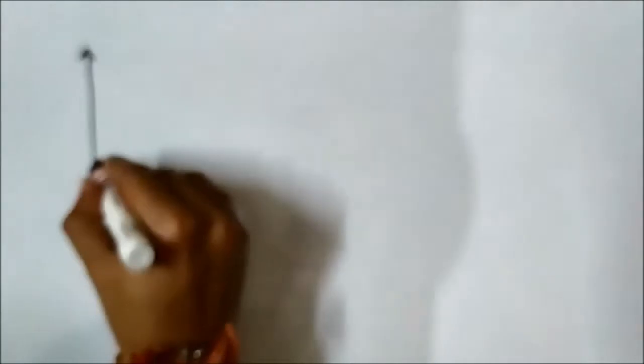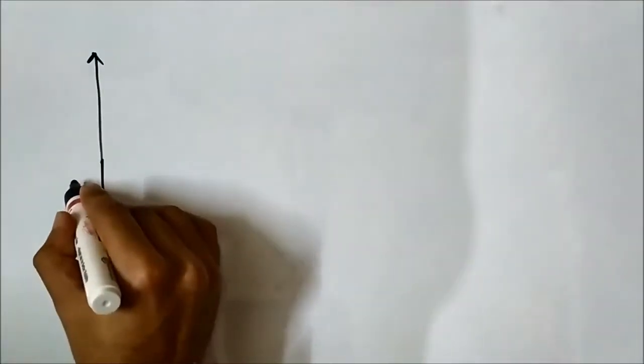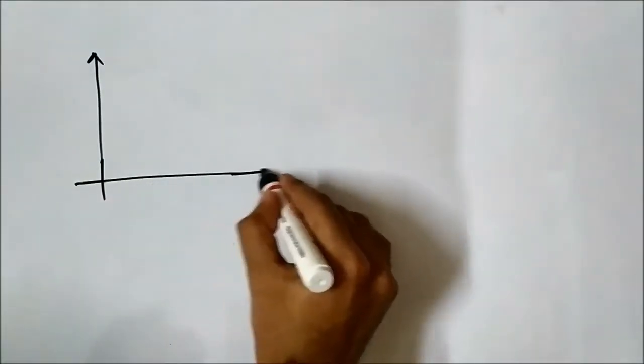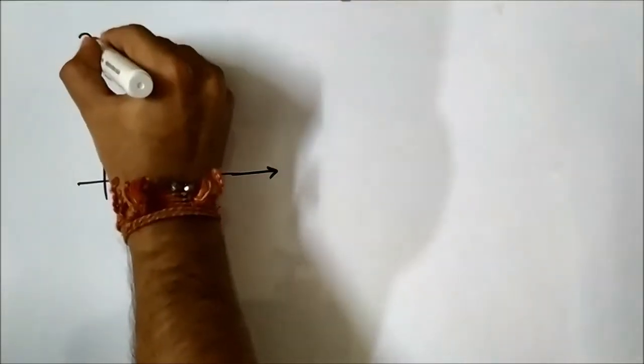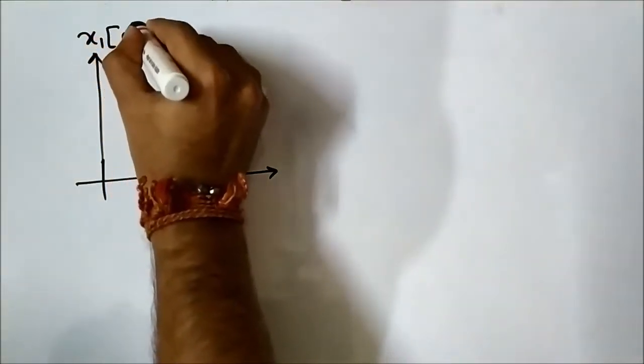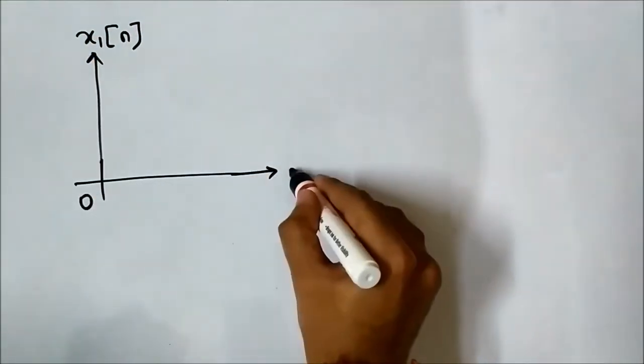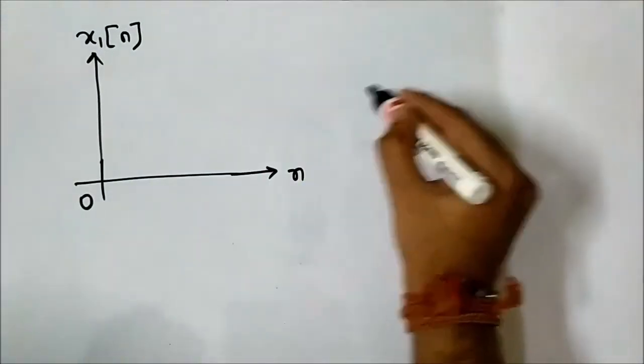So it is very simple. Let us say we take two discrete time signals x1[n] and x2[n].